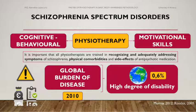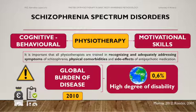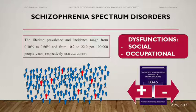Schizophrenia spectrum disorders, including schizophrenia, schizoaffective disorder, and schizophreniform disorder, are some of the most burdensome and costly illnesses. According to the Global Burden of Disease Study, schizophrenia spectrum disorders cause a high degree of disability, which accounts for 0.6% of the total disability-adjusted life years worldwide. The lifetime prevalence and incidence range from 0.30% to 0.66% and from 10.2% to 22.0% per 100,000 person-years, respectively.